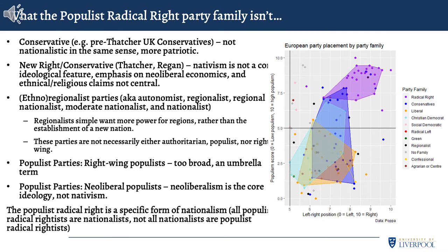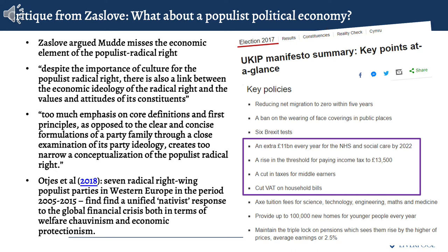Mudde argues the populist radical right is a specific form of nationalism: whilst all populist radical rightists are nationalists, not all nationalists are populist radical rightists. Non-xenophobic and elitist nationalists are excluded. The populist radical right is not fascist or Nazi since it is nominally democratic — just not liberal democratic. Although Mudde's definition has garnered widespread usage, Zaslove argues the minimal–maximal definition is too limited and excludes important ideological concepts, namely economic factors.